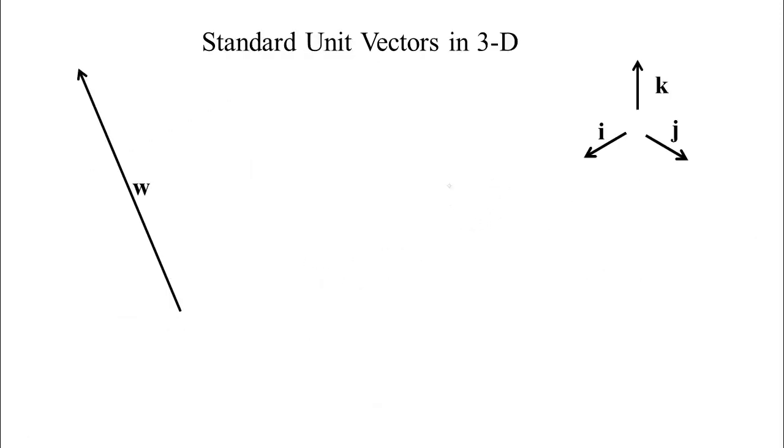Now, we can do something similar if we're in 3D. In 2D, we only need 2 unit vectors. The standard unit vectors in 3D, we have i and j. i again along the positive x-axis, j along the positive y-axis, and k, a vector of length 1 along the positive z-axis.